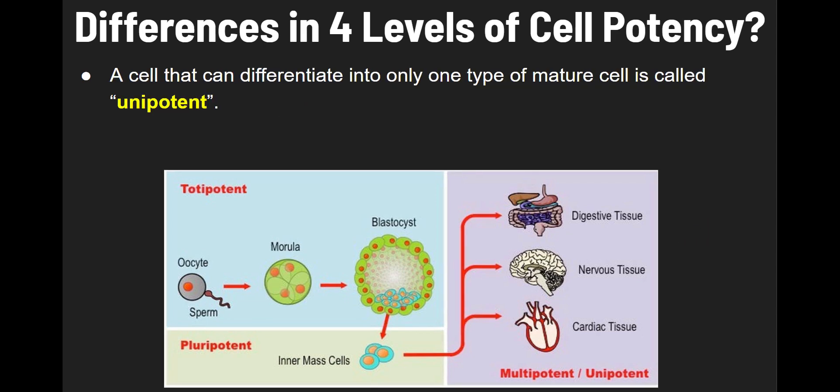Last, we have unipotent. A cell that can differentiate into only one type of mature cell is called a unipotent cell.